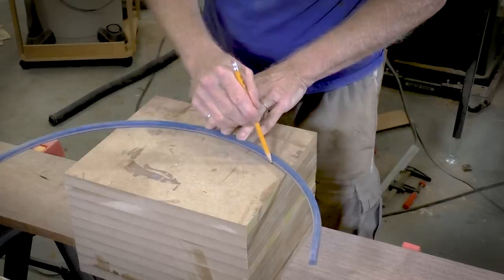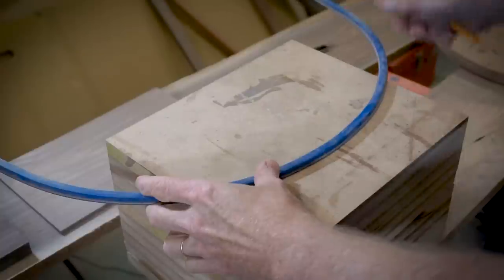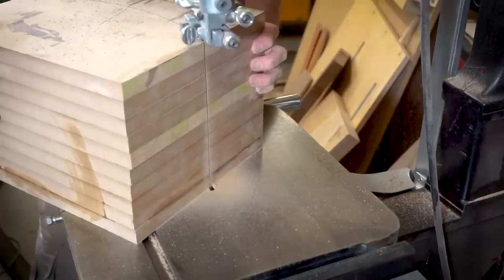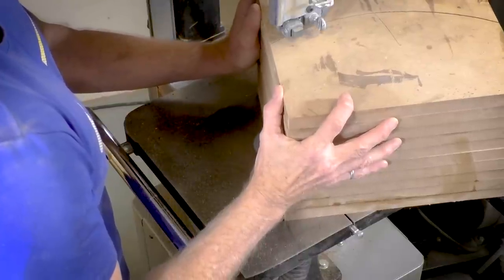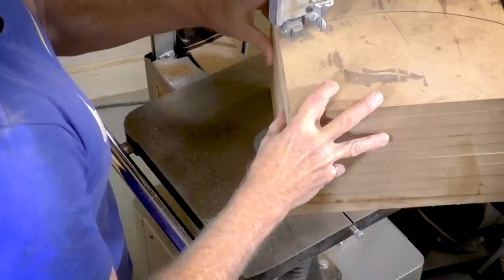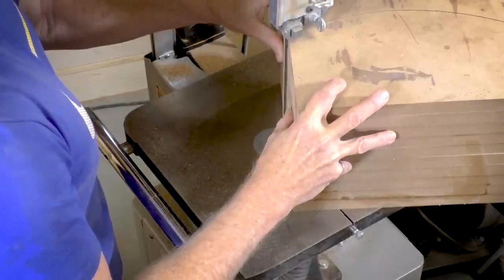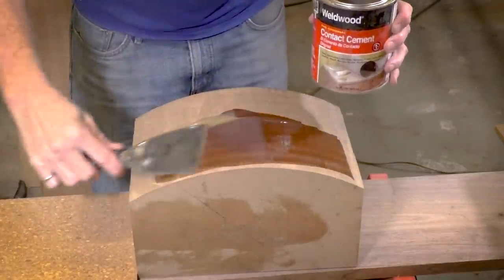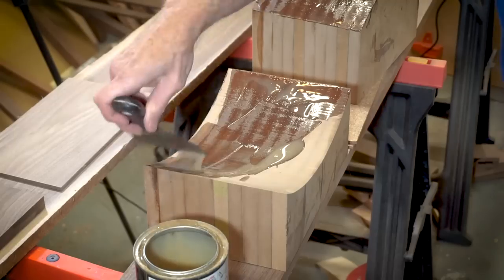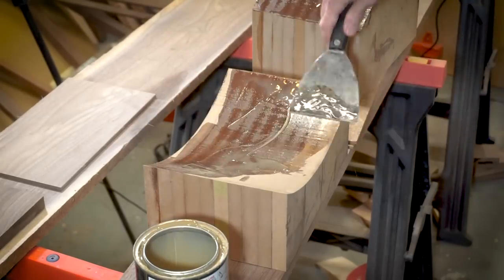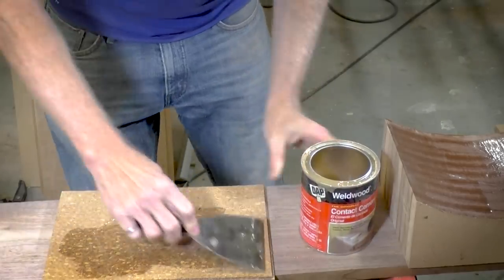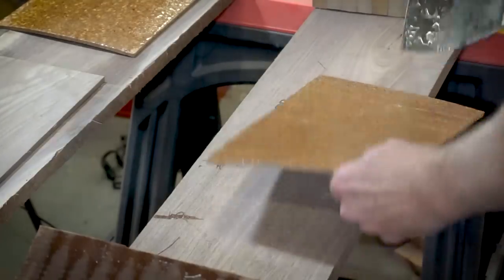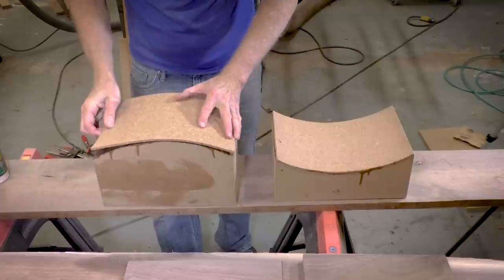Now I'll draw a curve onto the form and then cut it out on the bandsaw. Then I like to line my forms with cork so I'm using contact cement to apply the cork. The cork helps protect the wood that I'm gluing up and it also helps to compensate for any unevenness in the form.